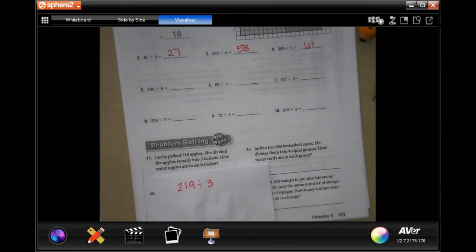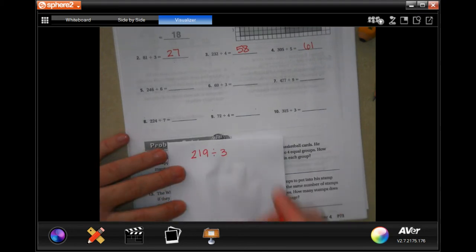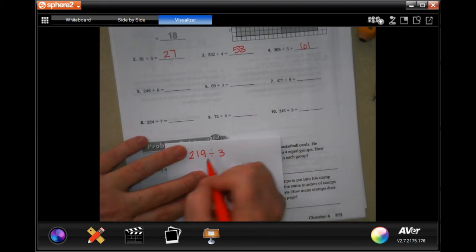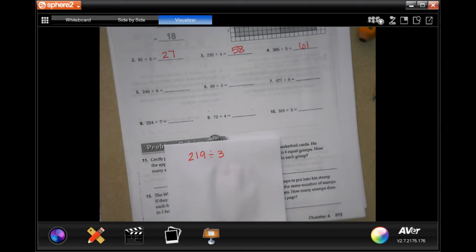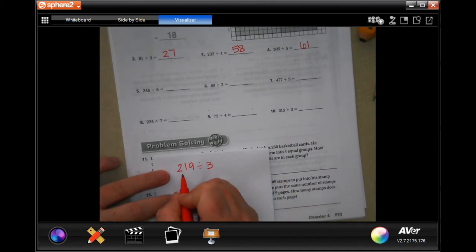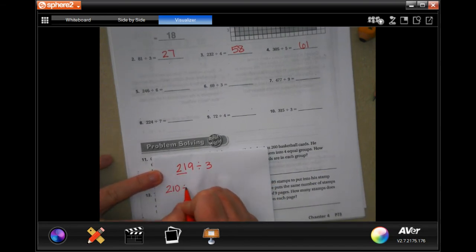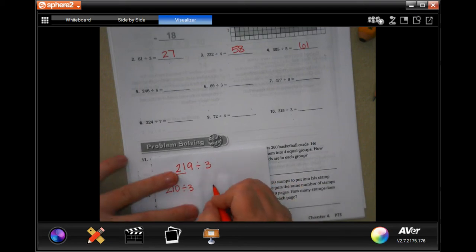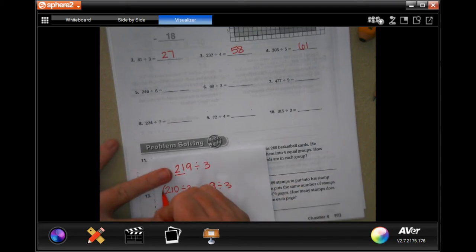How many apples are in each basket? We have 219 divided by three. So it wants us to use compatible numbers. Hold on a second, sorry about that. And I know that three goes into 210 or 21, so 210 divided by three, and I know that it has nine divided by three. I know that both of those would work.